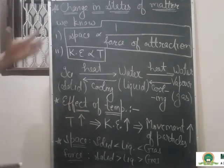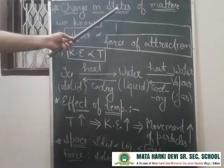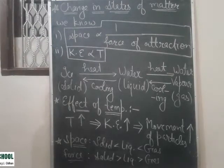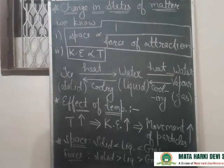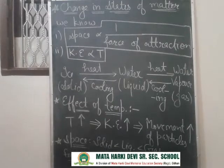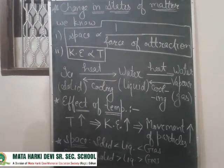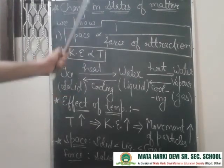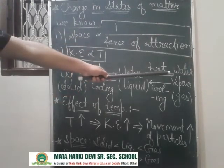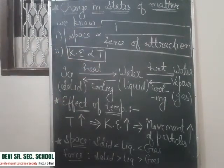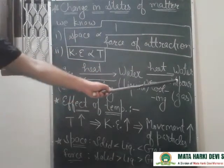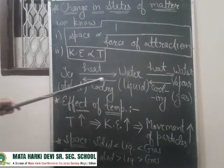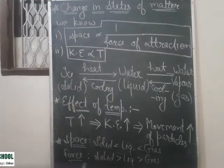Now, based on these assumptions, we will understand how one state of matter converts into another state of matter. From your general knowledge, you must have seen in your surroundings that when you heat ice, it changes into water, and when you heat water, it changes into water vapor. This is reversible: when water vapor is cooled, it changes back to water, and when water is cooled further, it changes to ice.